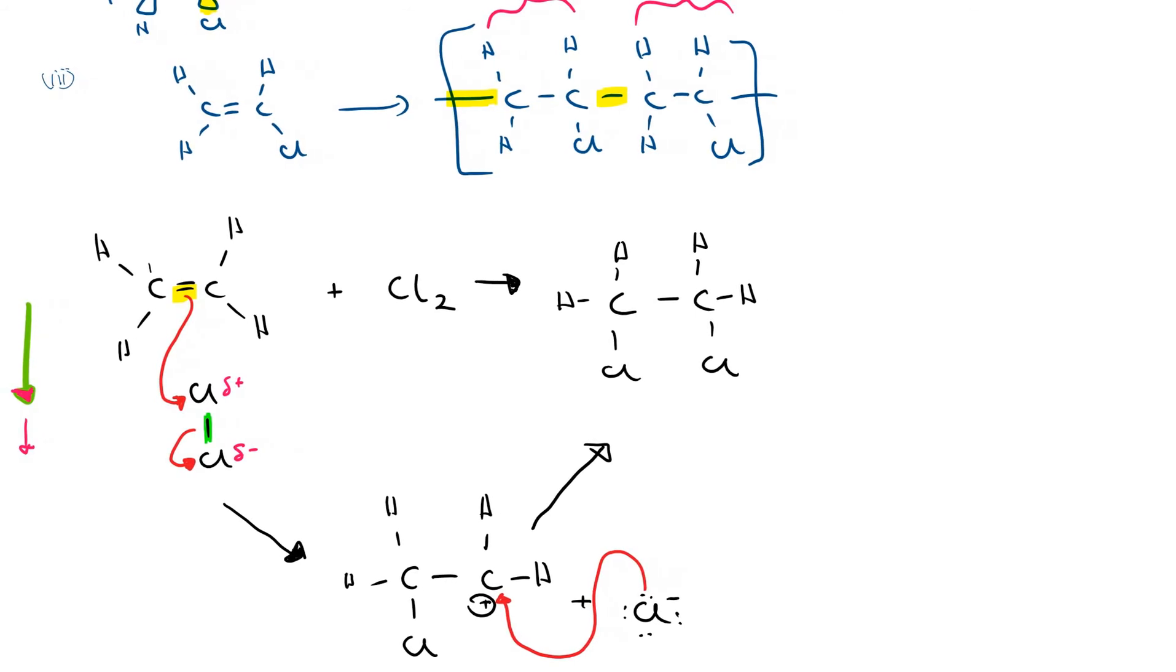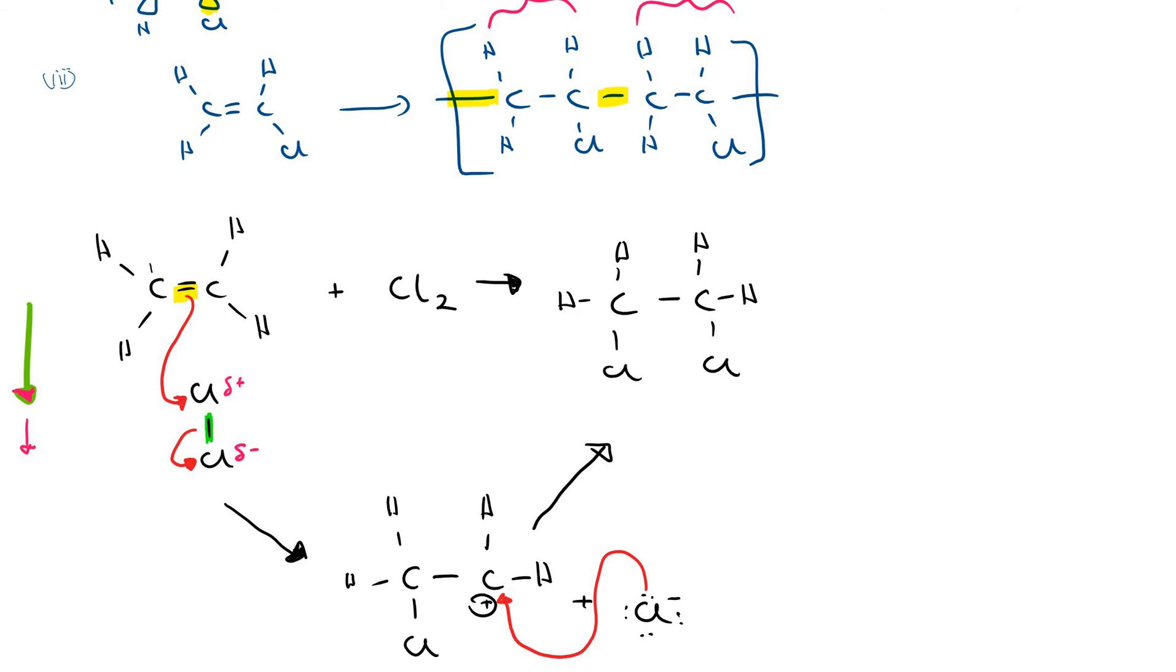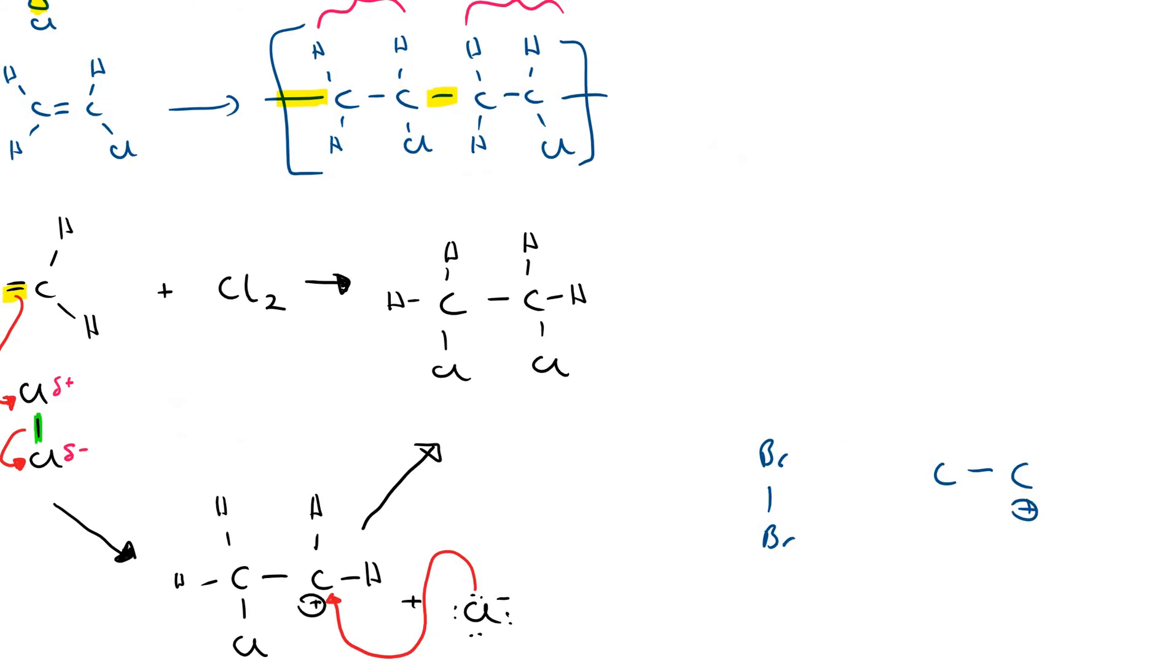Now if it was bromine that was added instead of chlorine, quite often what happens is you form the brominium ion. Because this one here is called a carbocation, but usually when you have bromine, one of the intermediates that's formed is this. So that immediately just snaps shut and you form this thing which is called a brominium ion.